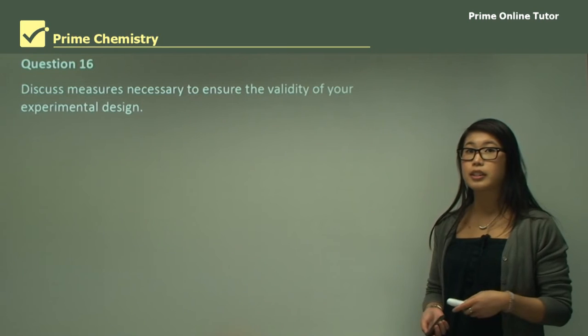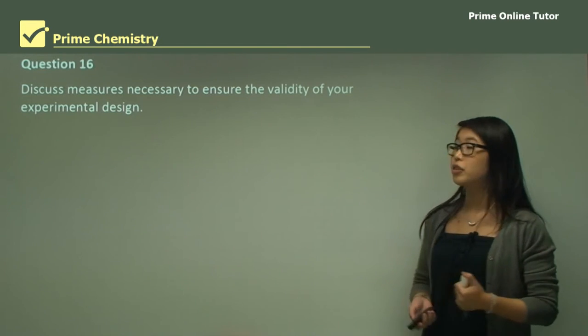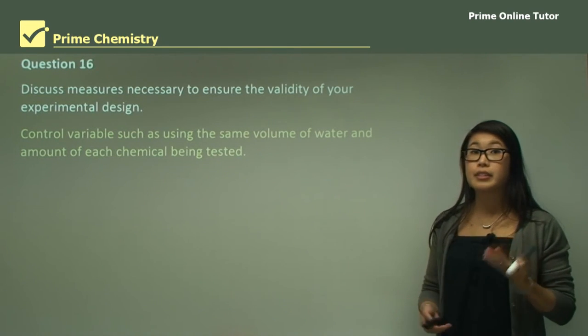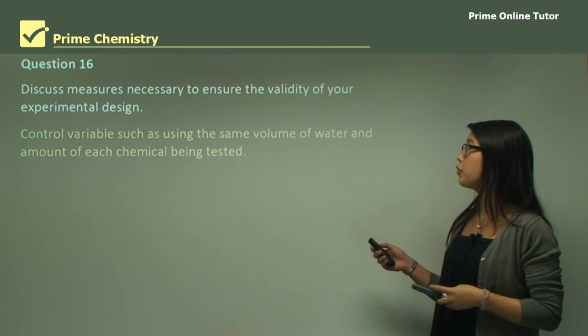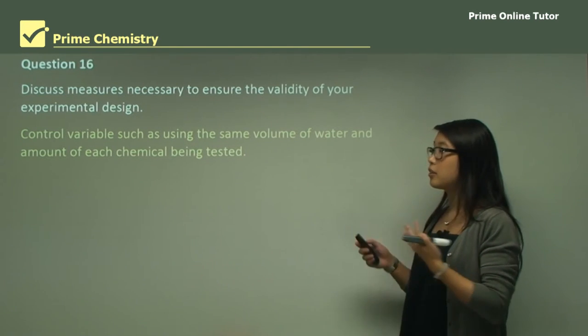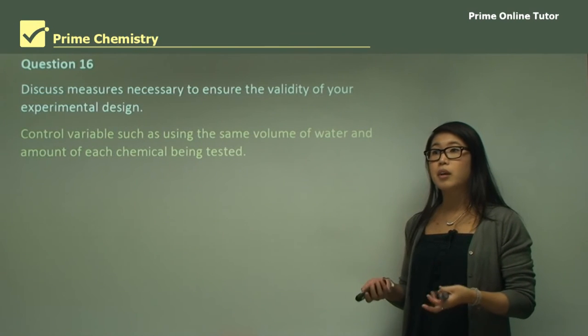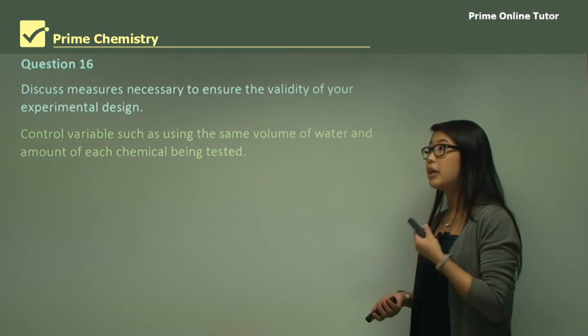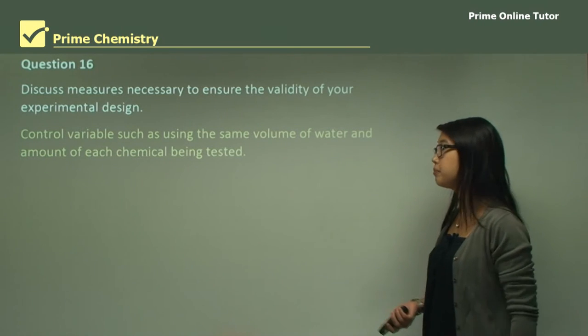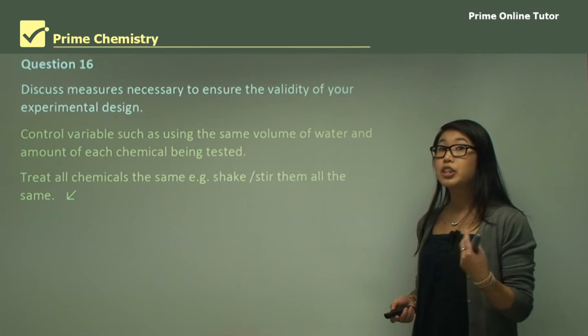Question 16 says discuss measures necessary to ensure the validity of your experimental design. We need to have a control variable, so something that we're comparing to so that we can see if there's any differences. The control variables such as using the same volume of water and the same amount of each chemical being tested, that's going to be something that we keep consistent. If we change the volume of water, then it's going to change the solubility of a certain compound. We need to treat all the chemicals the same: shake them the same, stir them the same, shake them for the same amount of time.